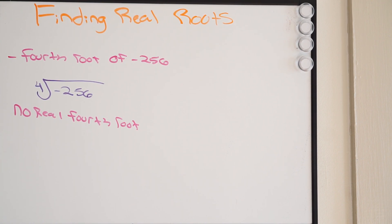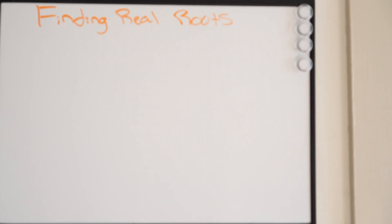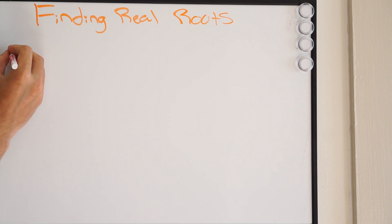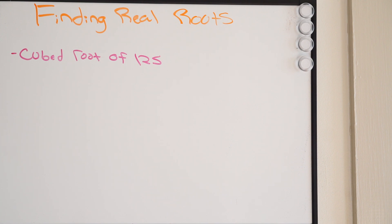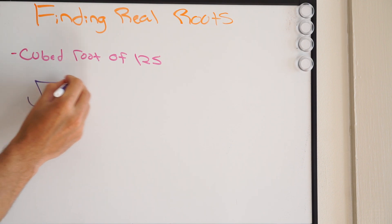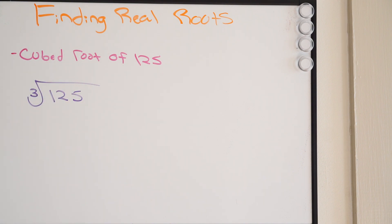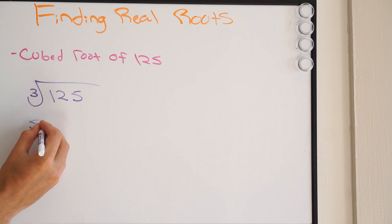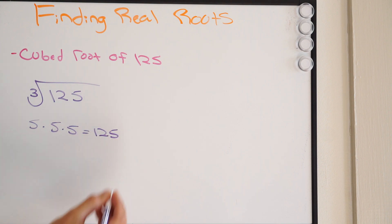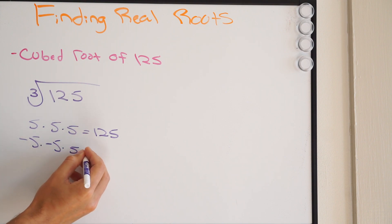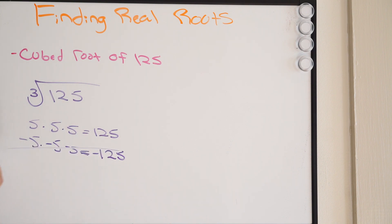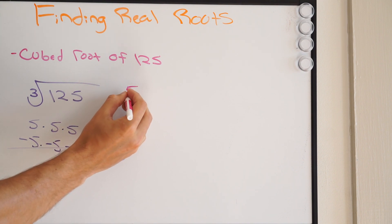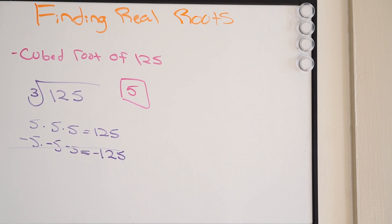Let's try one more — the cube root of 125. We're dealing with an index of 3. What number times itself three times gives you 125? That's 5 times 5 times 5, which equals 125. If you try negative 5, that gives negative 125, so negative 5 doesn't work here. We get a single answer of 5. The cube root of 125 is 5, and that is how you find real roots.